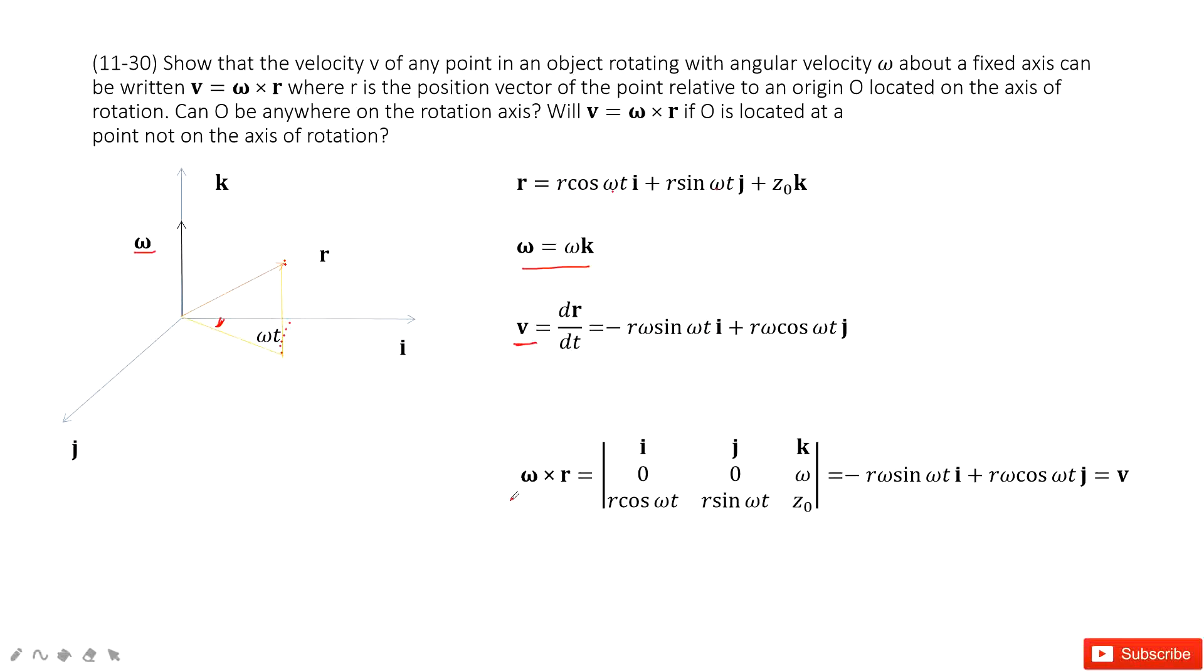Now we write ω cross R. Use the determinant rules for ω times R. So ω is only at the k component and velocity V has the i component and the j component. After we do the calculation, we get this answer. Now we compare this with the previous result. It is just V. Then we proved V equals ω cross R. No problem.